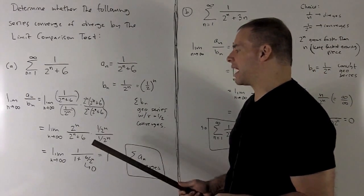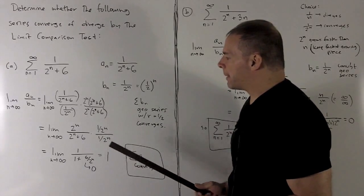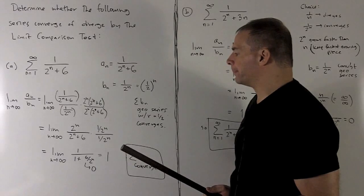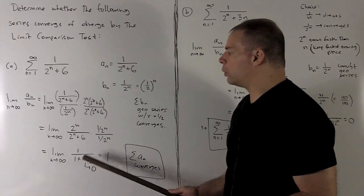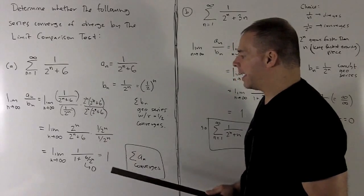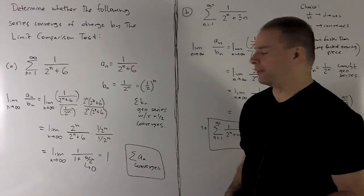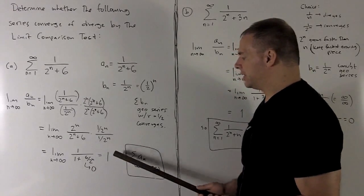When I do that, I'm going to be left with 2 to the n on top, 2 to the n plus 6 in the bottom, and we're going to clean this up by multiplying top and bottom by 1 over 2 to the n. It's going to turn our top term into a 1, this term into a 1, and this will turn into 6 over 2 to the n. As we go out to infinity, 2 to the n is going to go out to infinity, so this term here is going to go to 0, and our limit is equal to 1.